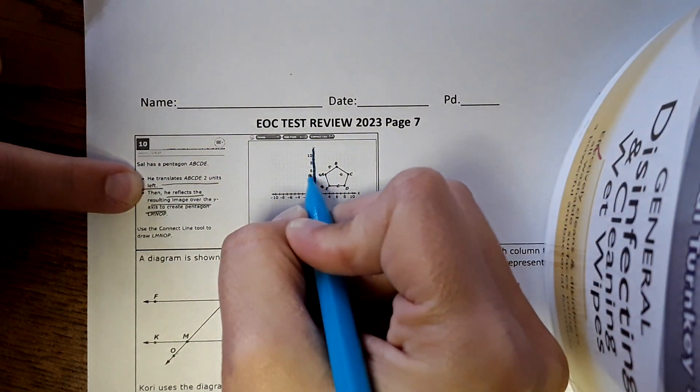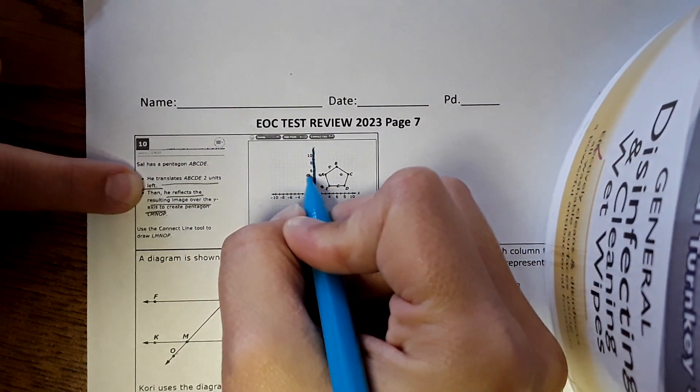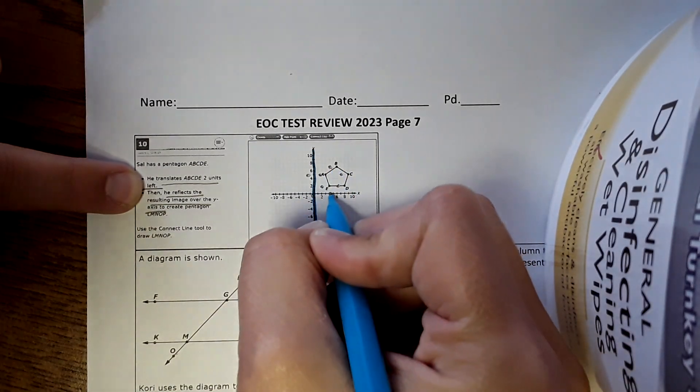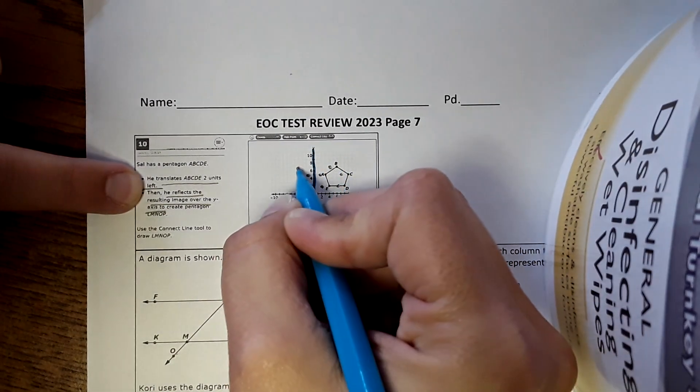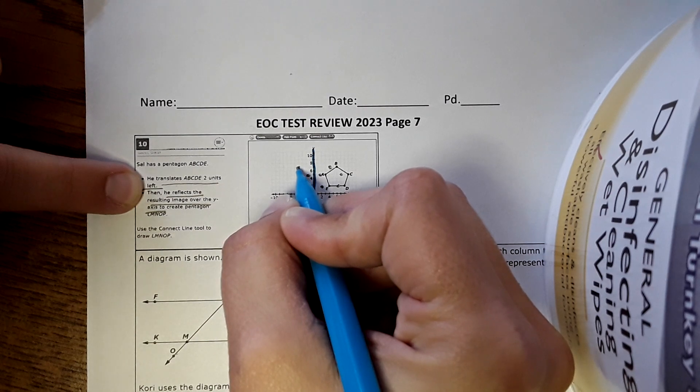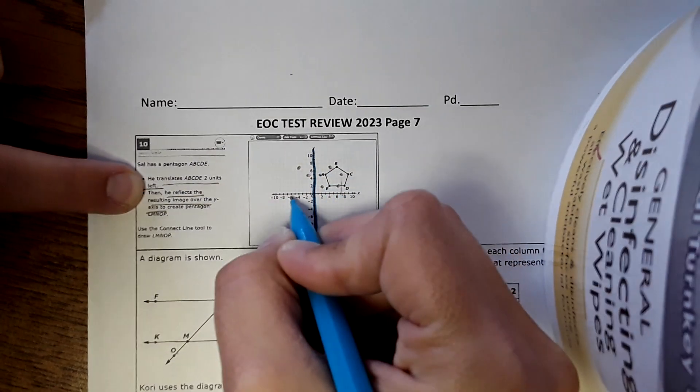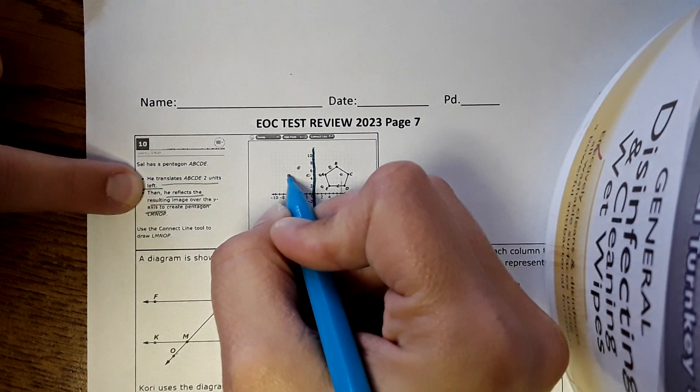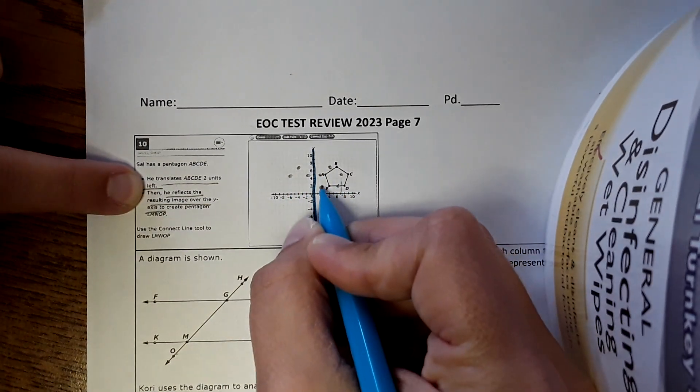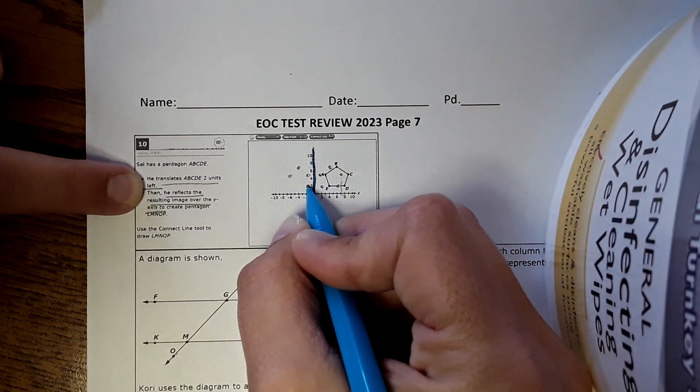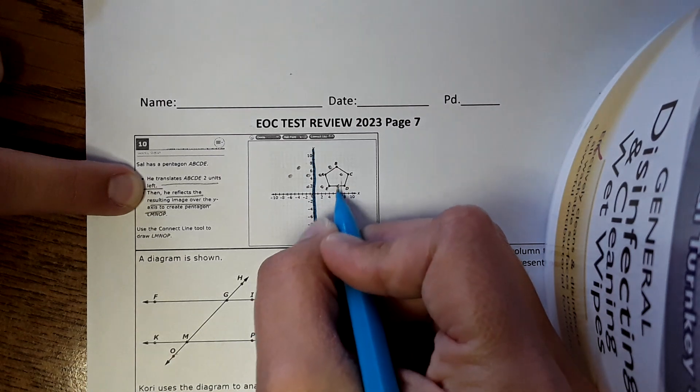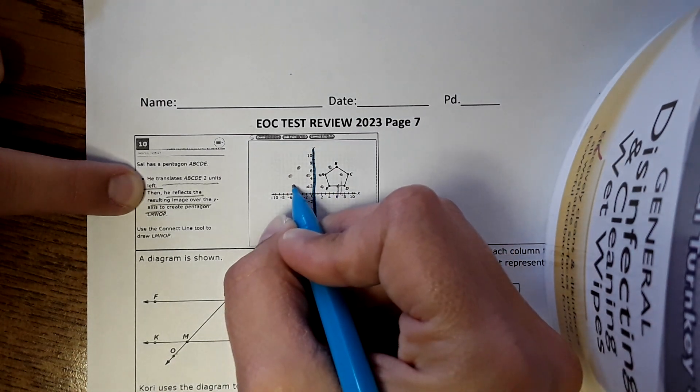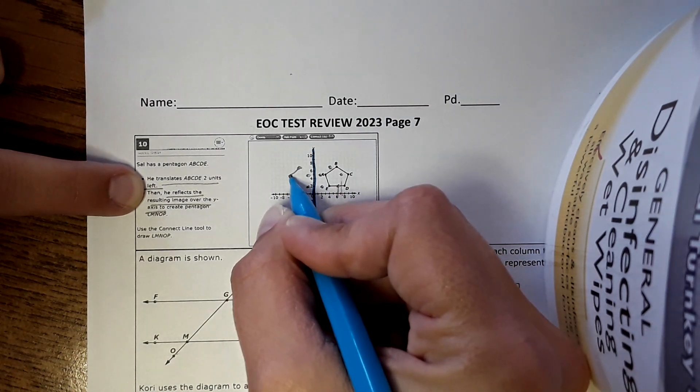So this point A would go two units over here. This is at 4, so it would go to negative 4 right here. This one is at 7, so then it would be at negative 7 on the other side. This one's at 2, so then it would be negative 2 over here. And then this one's at 6, so it goes to negative 6 on this side, and then I would draw the shape.